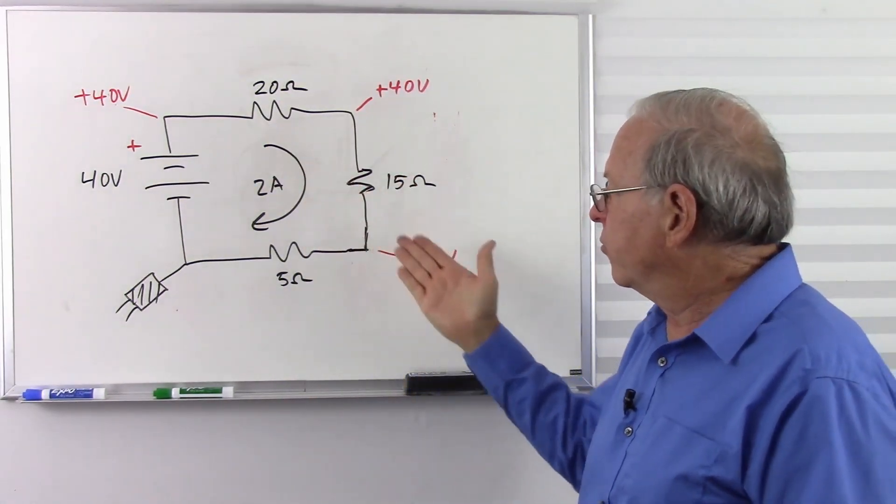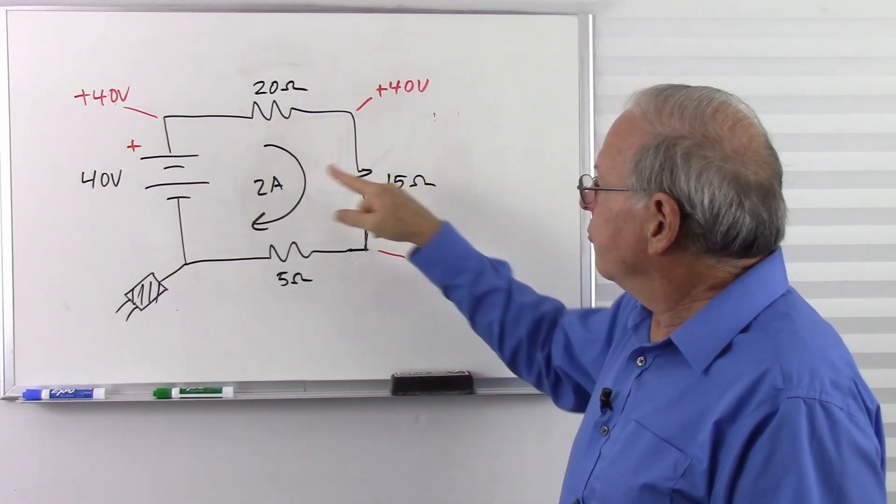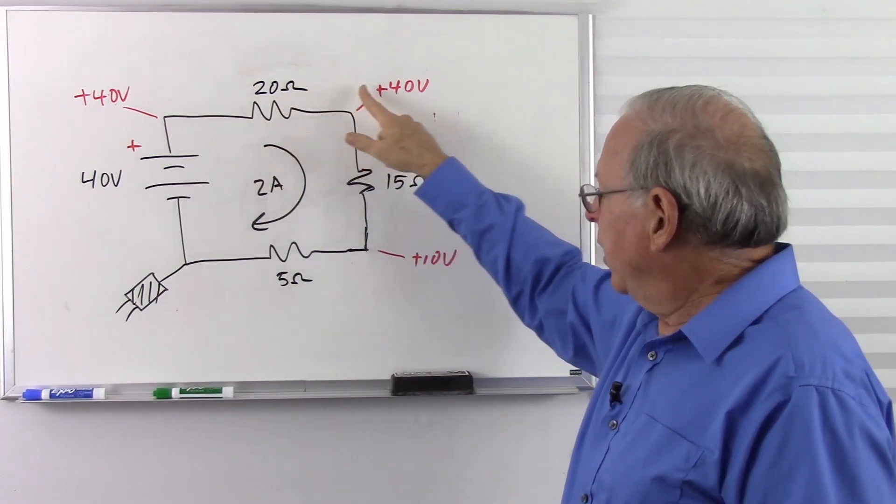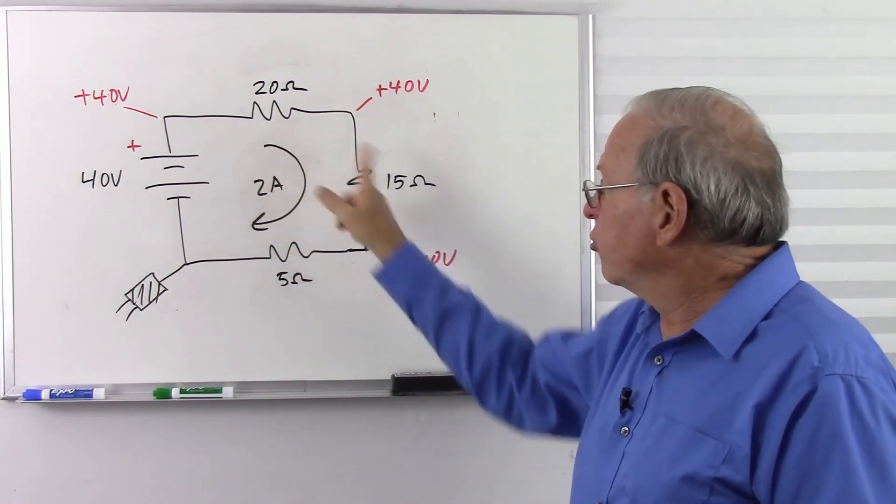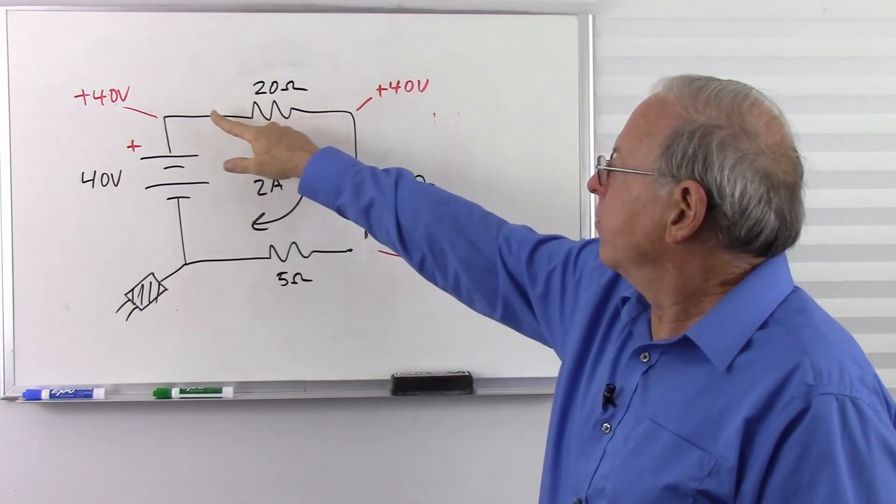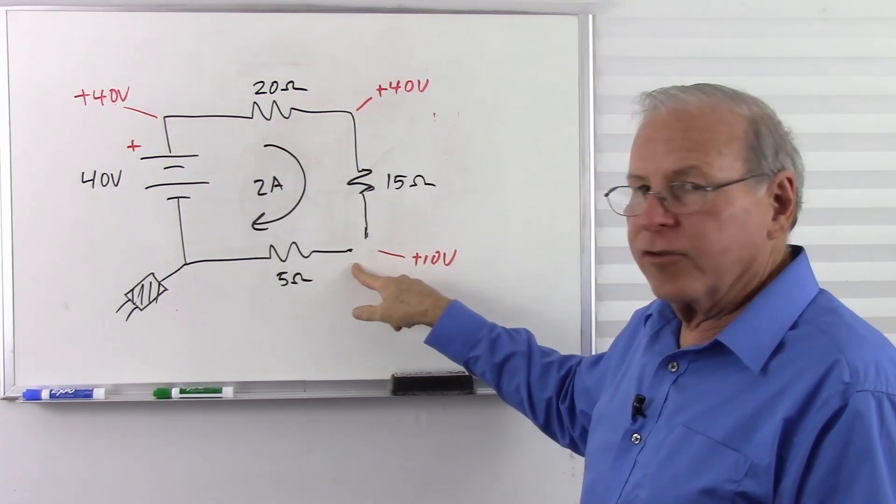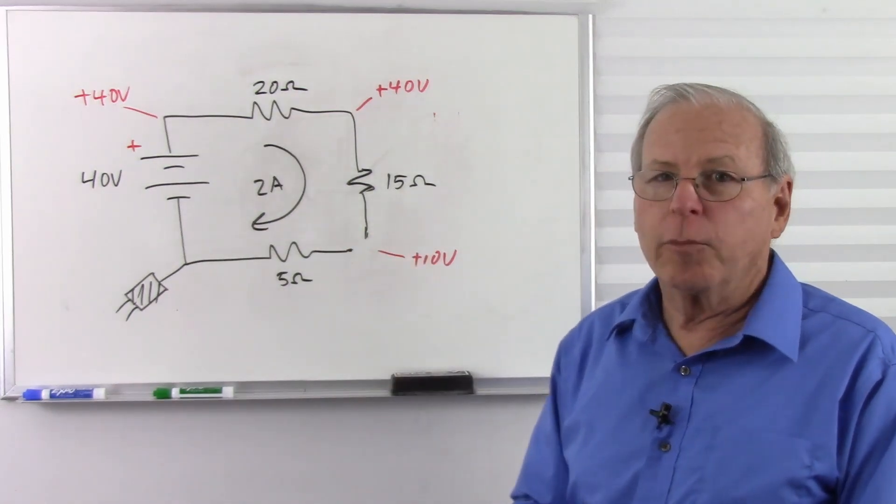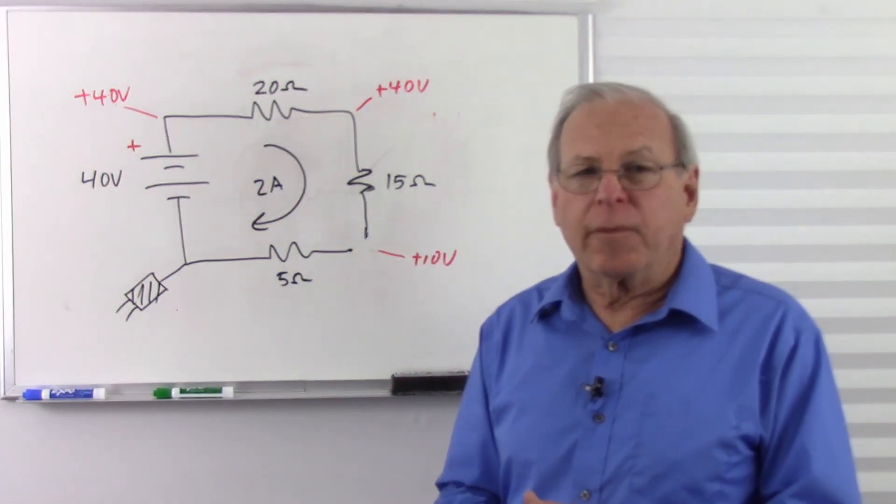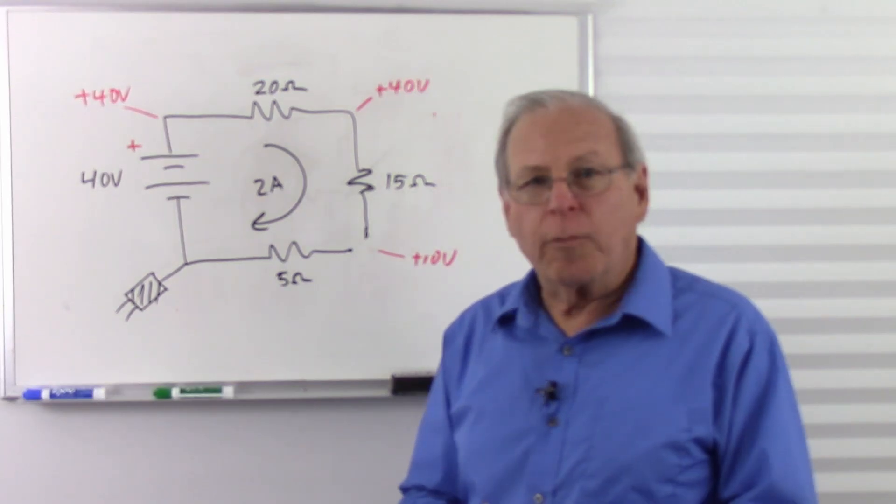But we're mainly looking at open circuits here. So, there's your troubleshooting technique. If you see something like that, you've got a short. But if you see 40 volts, 40 volts, 40 volts, 0 volts, then you have an open. And that's basically what we need to know about open circuits.